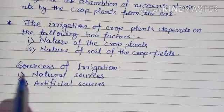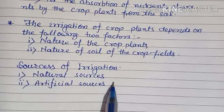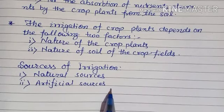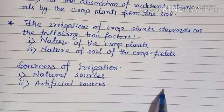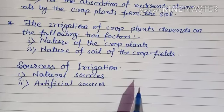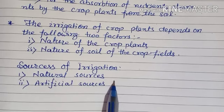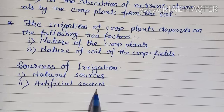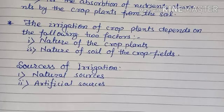Now we will discuss the different sources of irrigation. There are two types: natural sources and artificial sources. Natural sources of irrigation include water reservoirs, ponds, lakes, rivers, and wells. Artificial sources of irrigation include dams, canals, tube wells, waterways, sprinklers, etc.